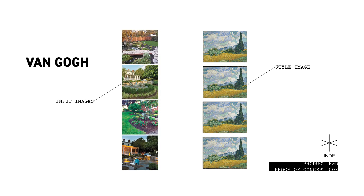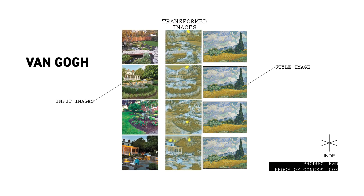Let's see some examples of this with Van Gogh. We have our style image, four different input images, and the resulting transformed images.